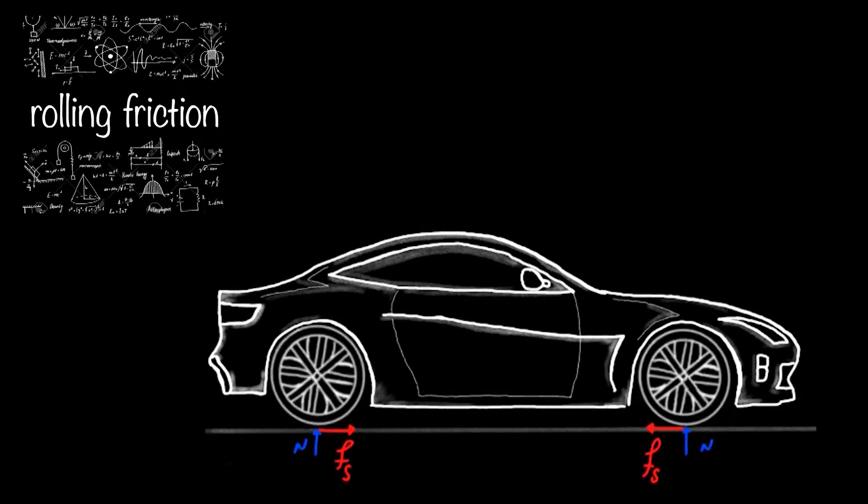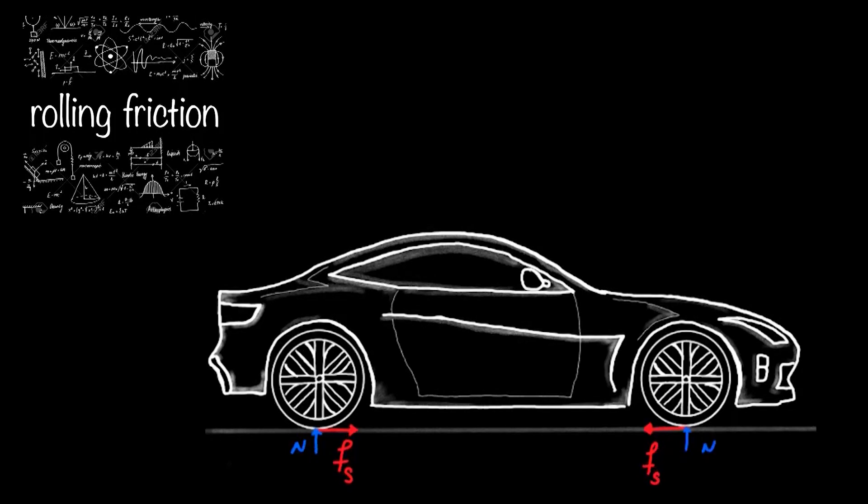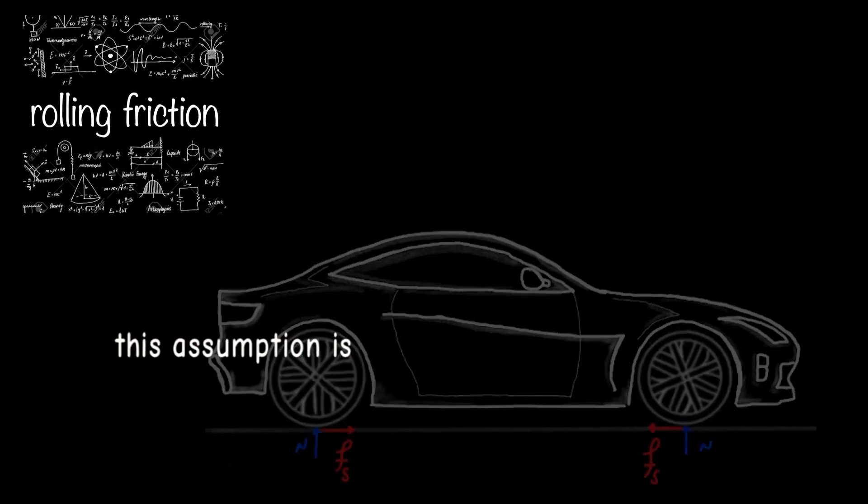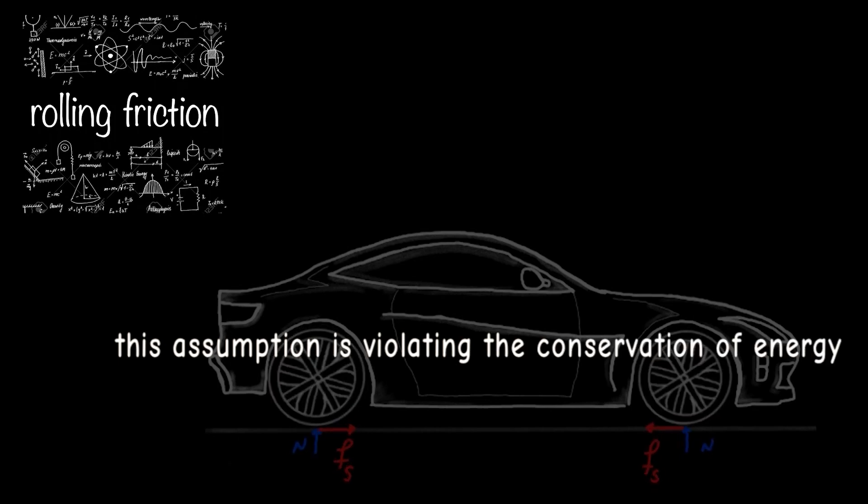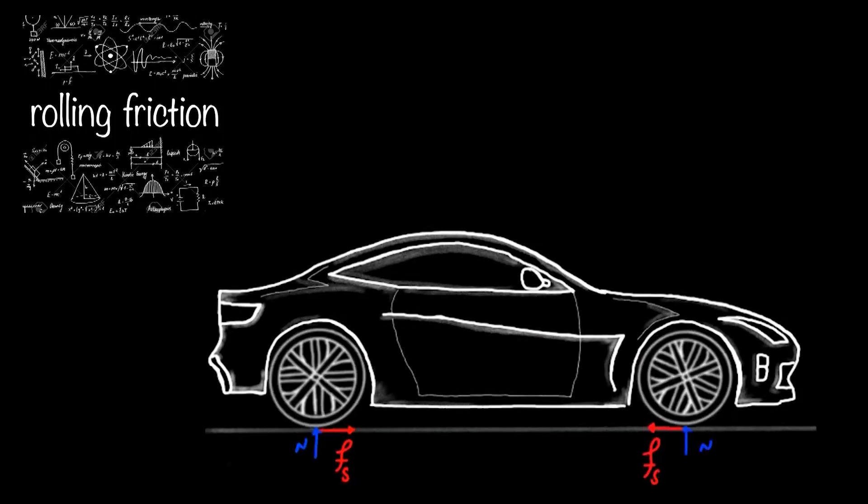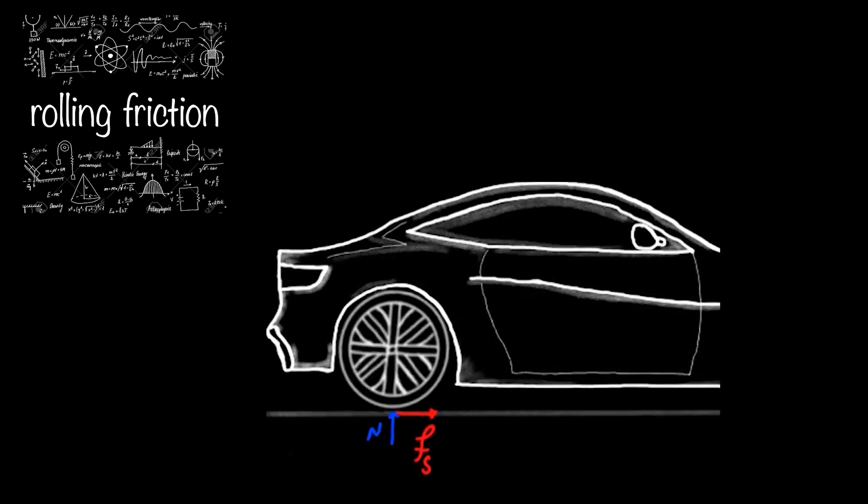This assumption is violating the conservation of energy principle. So it can be concluded that the resistance friction would be to the right.